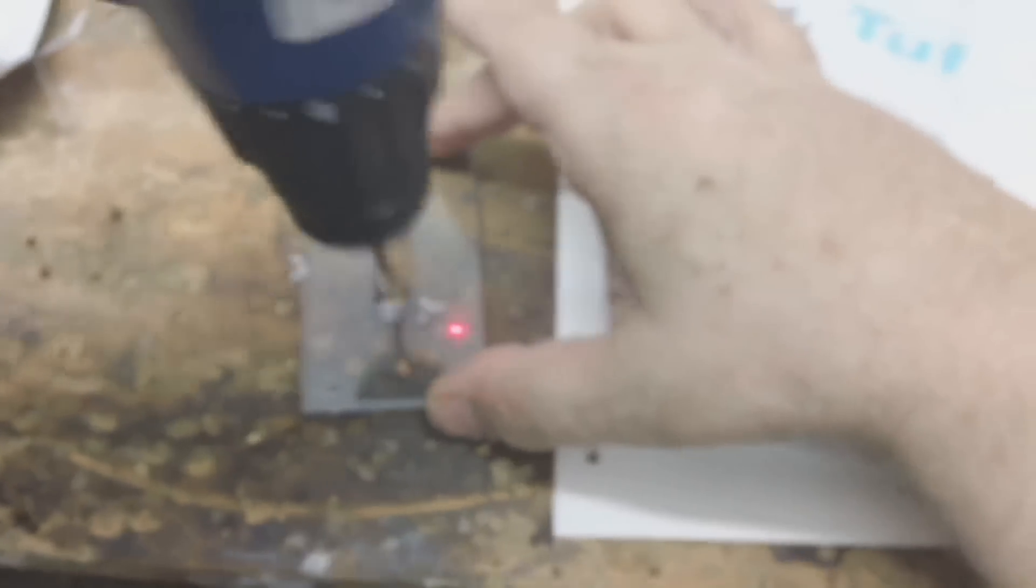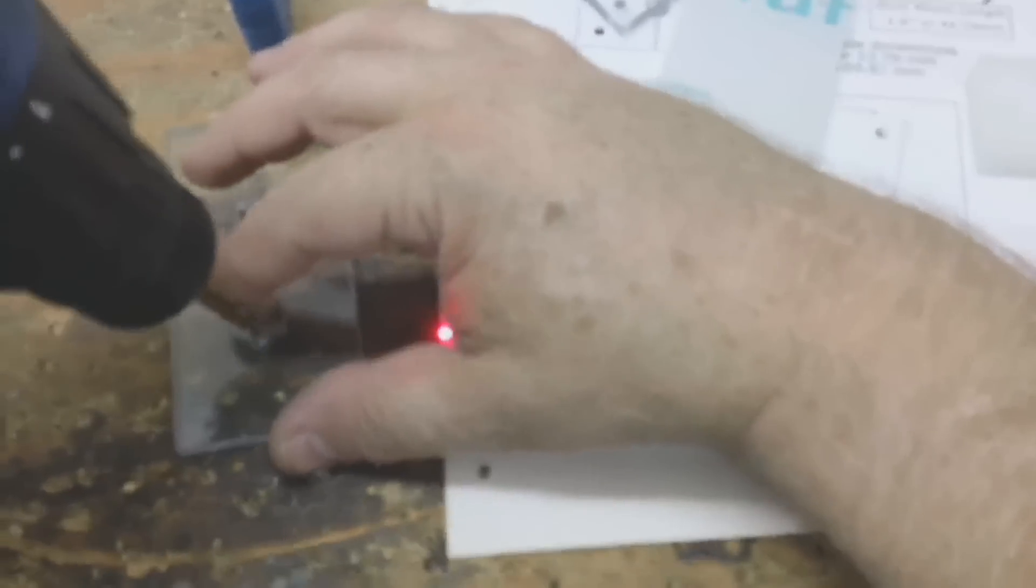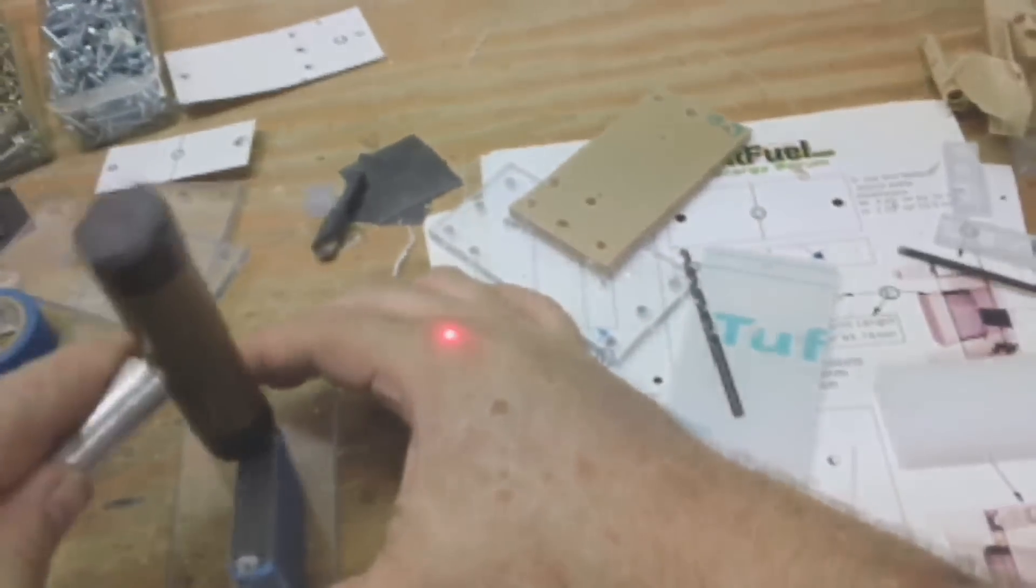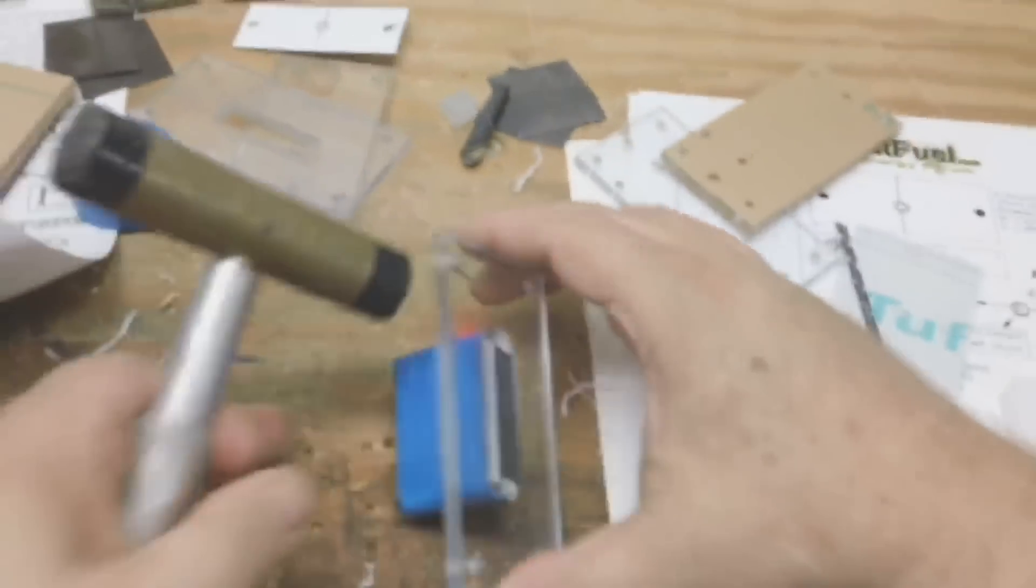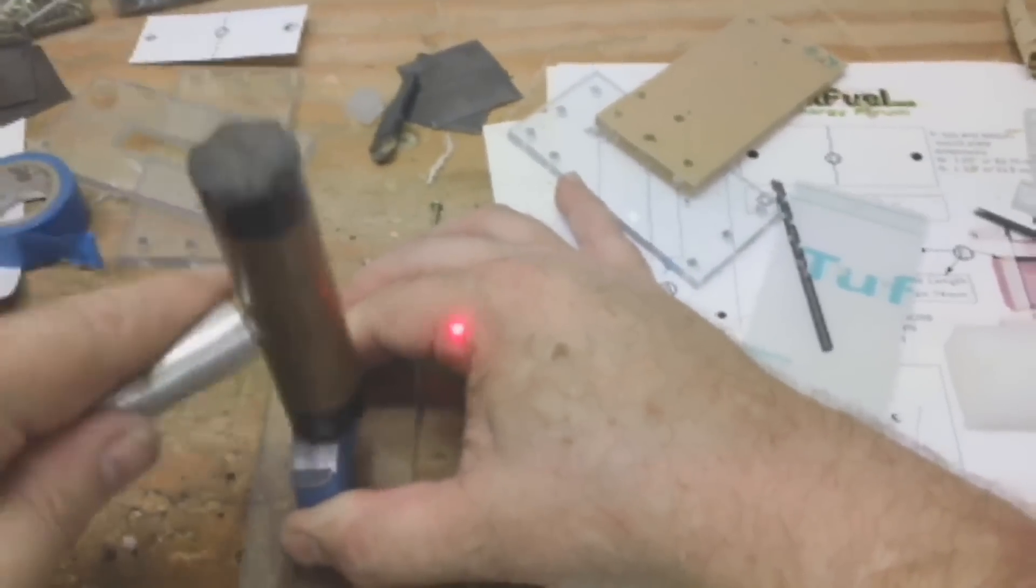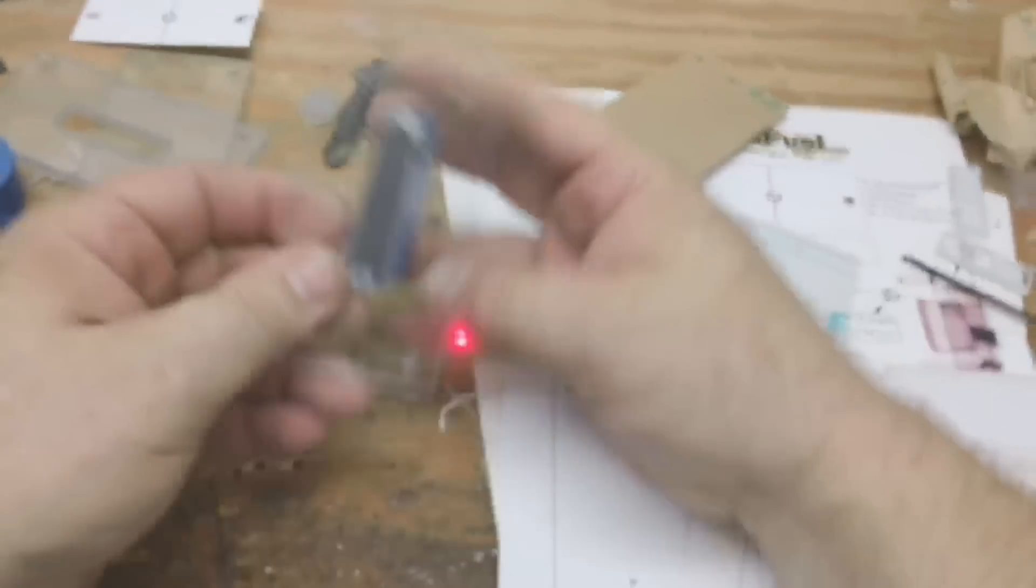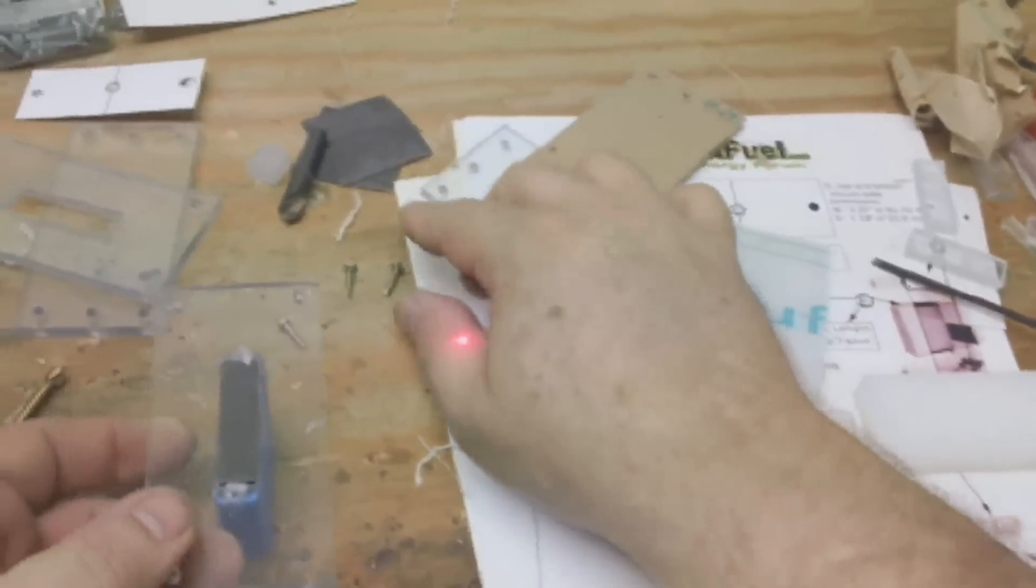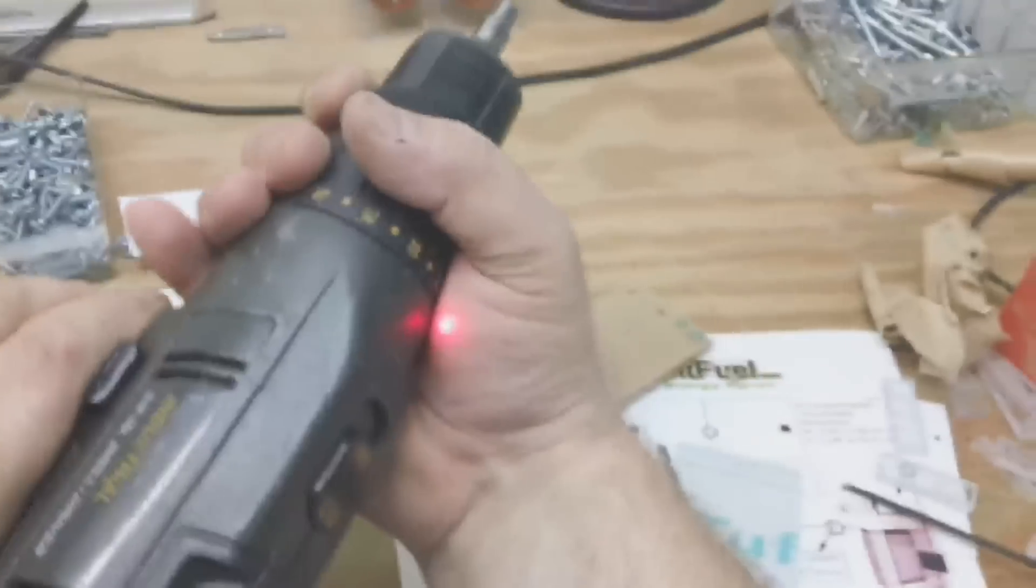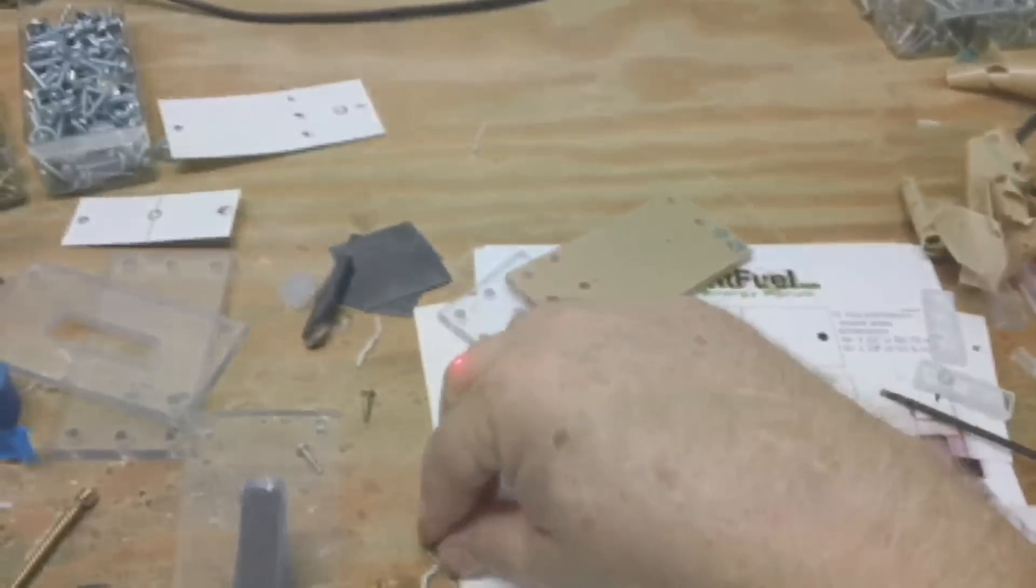We got this all straightened out here. Square it up real good. There we go, now ready to put these screws in. You want to have a drill that's got a low speed on it, and you got it adjusted so you don't want to strip that head off.